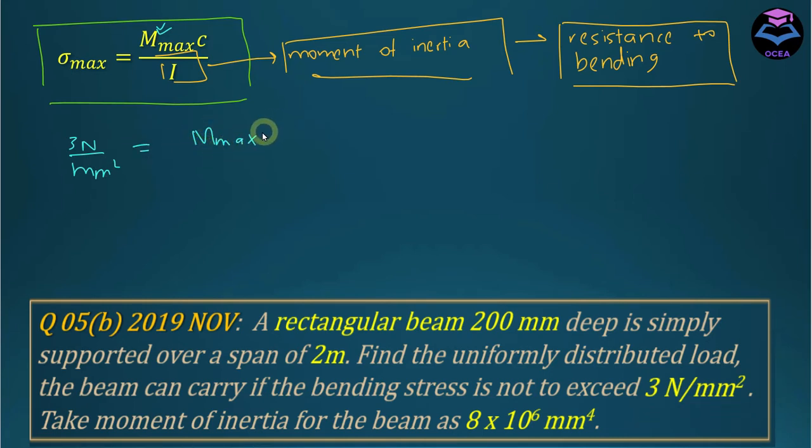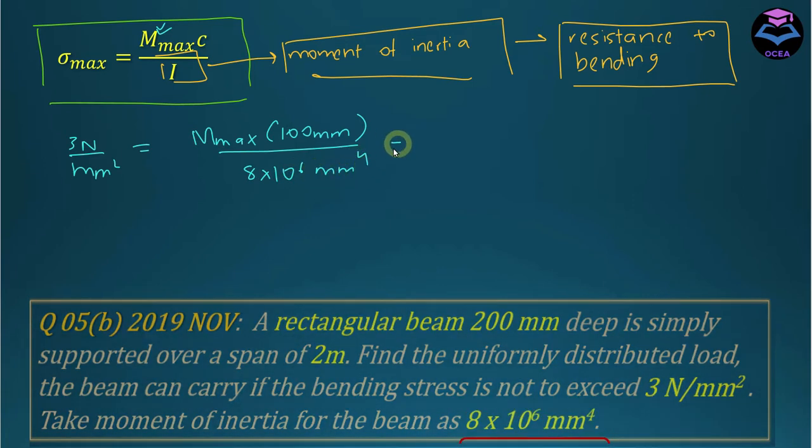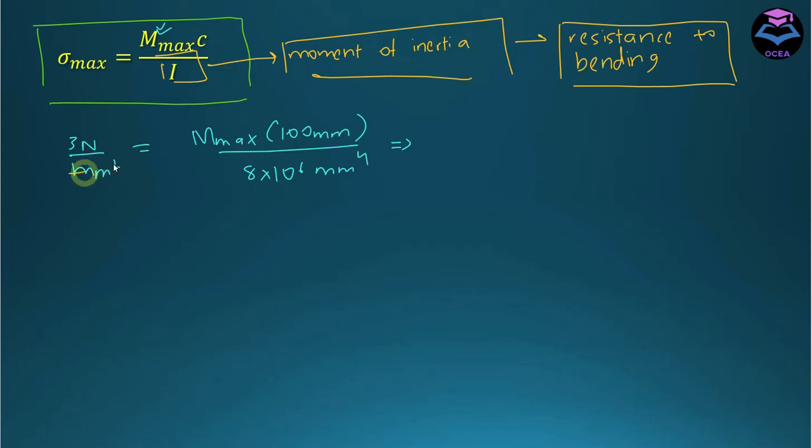C is 100 millimeters, and I is 8×10⁶ mm⁴.